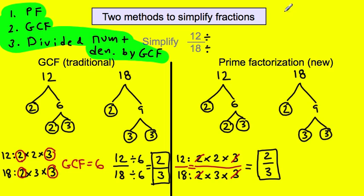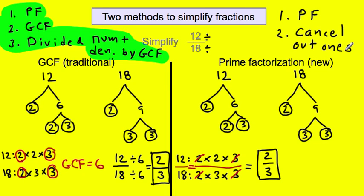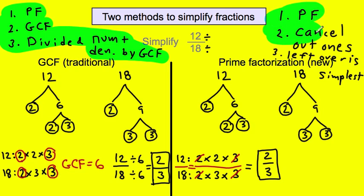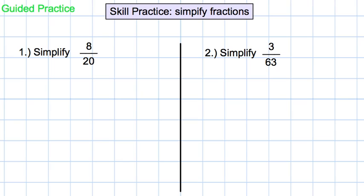If you're doing the greatest common factor method, here are your notes. If you're doing the prime factorization method, here are your notes: number one, do prime factorization; number two, cancel out 1s; and number three, what's left over is simplest. Either way, it's your choice. Just make sure that when you pick one, you stick with it and master it.